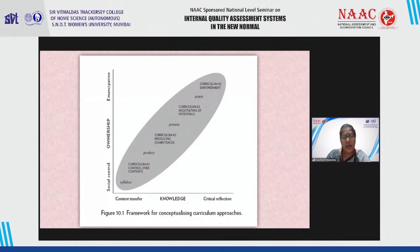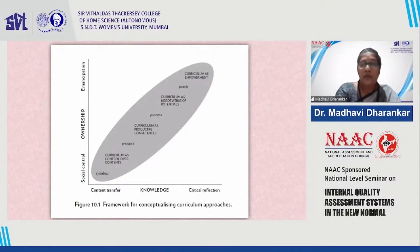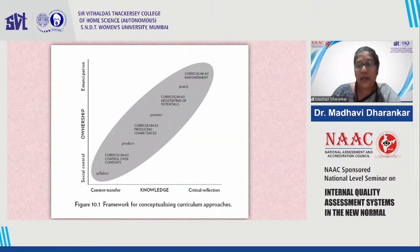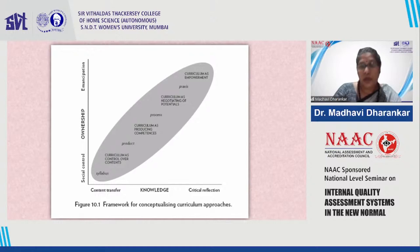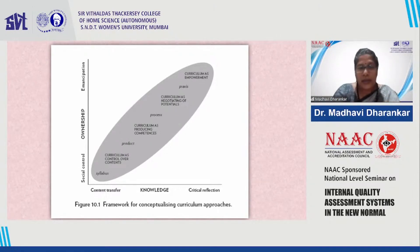On the x-axis, you can see how it grows from merely transferring the content — so my university or college has told me this is the content in the syllabus and whether I'm doing justice to that. That's the level of thinking at the start. From there it goes to knowledge, and from there to critical reflection, where the teaching begins asking whether this content should be there, why it is there.